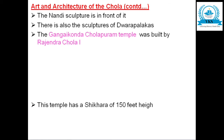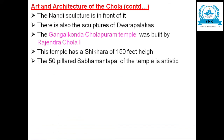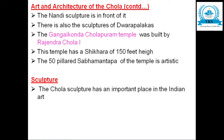The next example of Chola architecture is the Gangaikonda Cholapuram temple, built by Rajendra Chola I. This temple has a Shikara of 150 feet high. The 50-pillared Sabha Mantapa of the temple is very artistic. These are the two main examples of Chola architecture: the Raja Rajeshwara temple by Raja Raja Chola I, and the Gangaikonda Cholapuram temple by Rajendra Chola I.